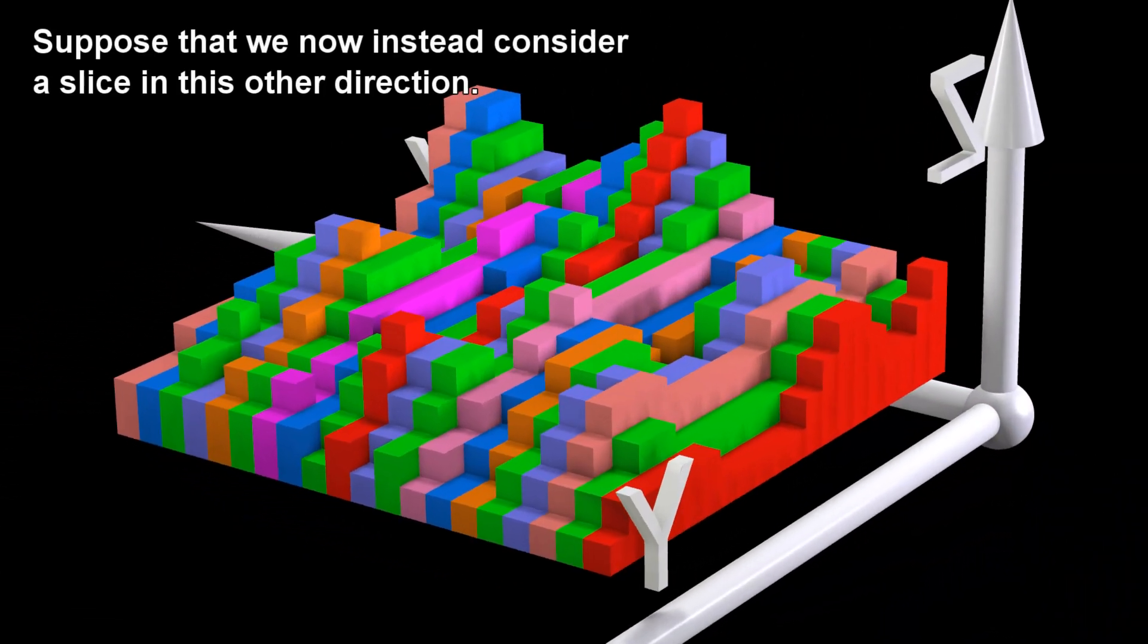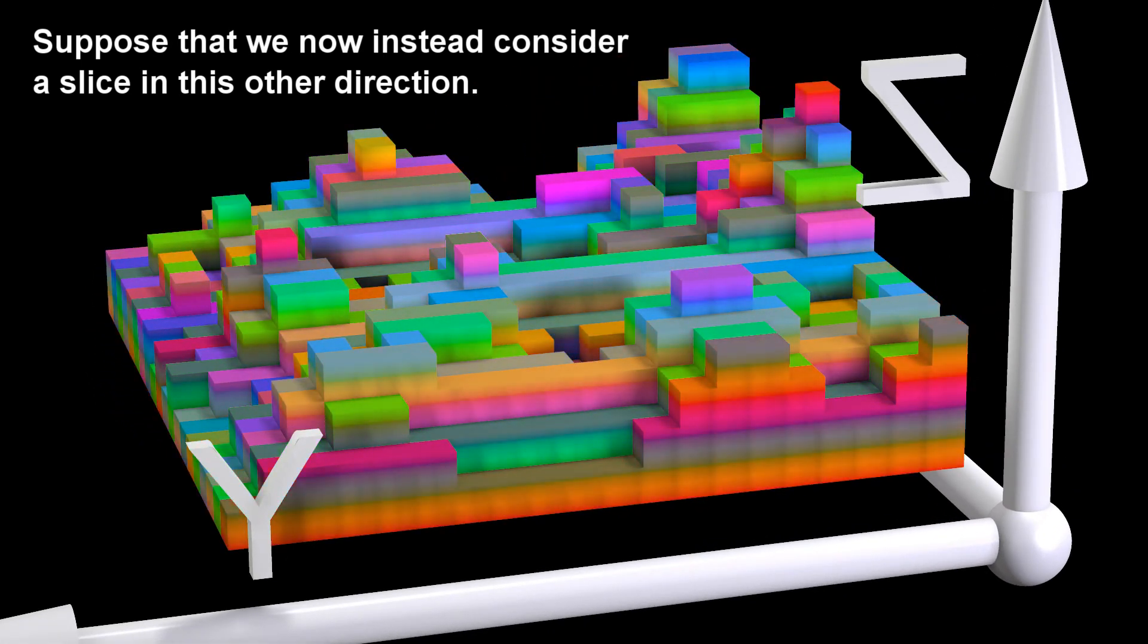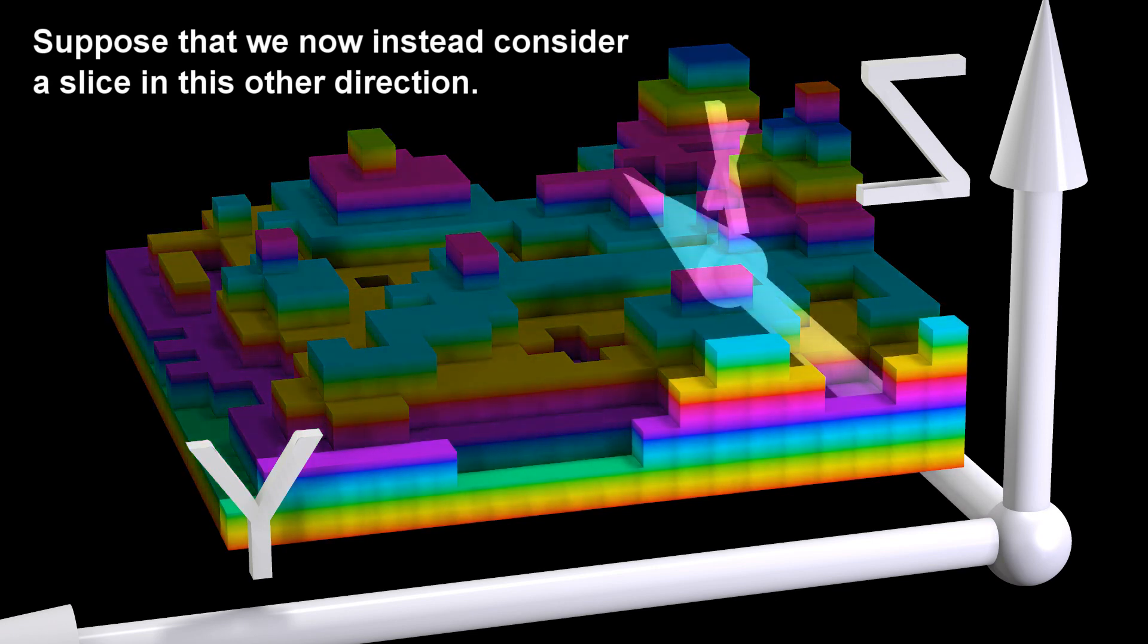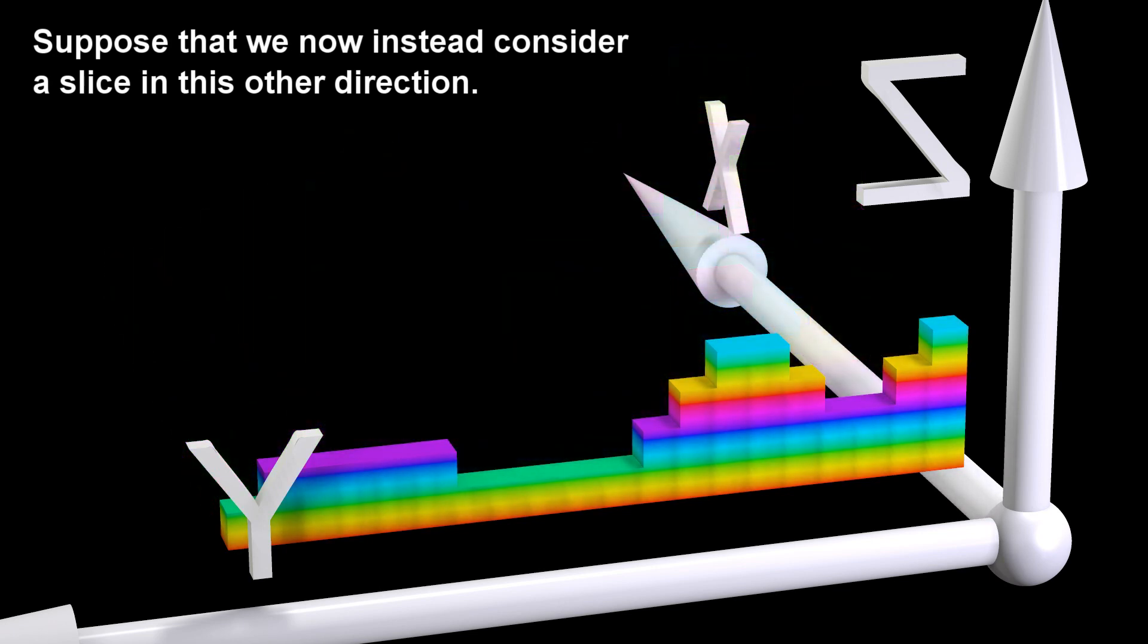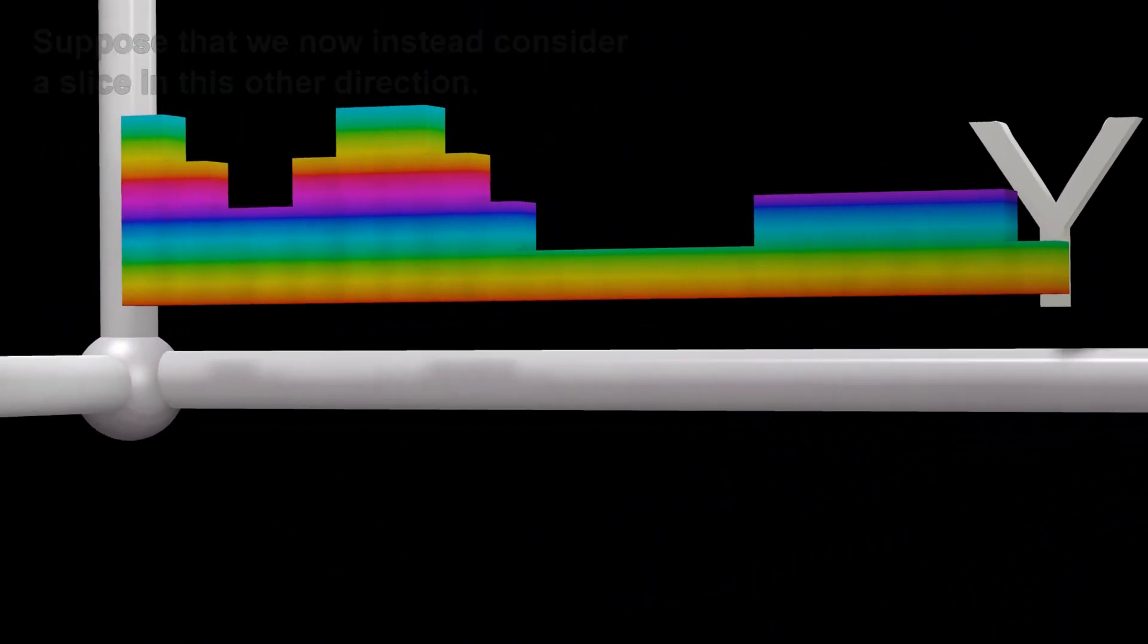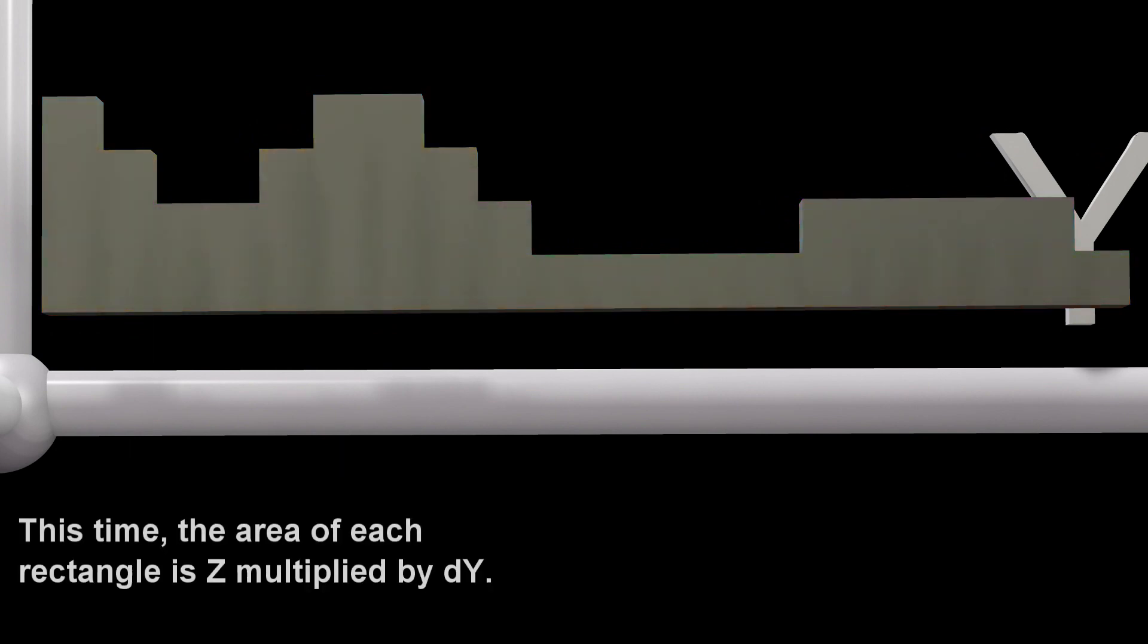Suppose that we now instead consider a slice in this other direction. This time, the area of each rectangle is Z multiplied by DY.